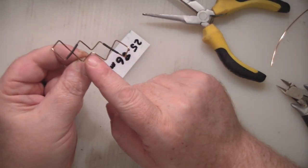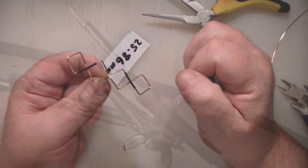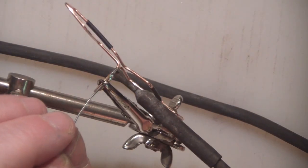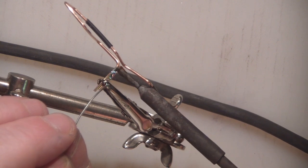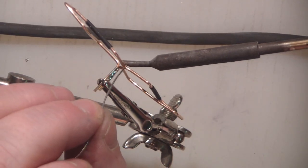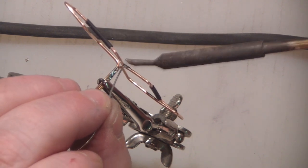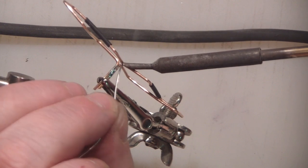What we're going to do now is solder these two legs together and then we can straighten it out a little bit more.